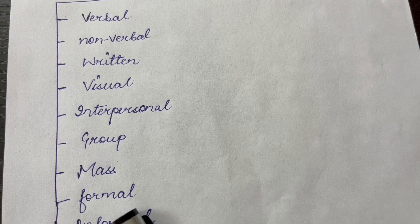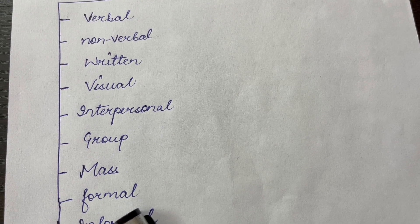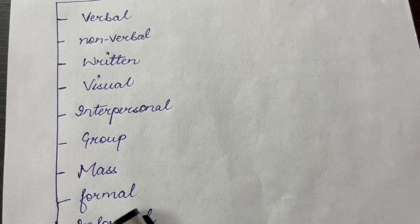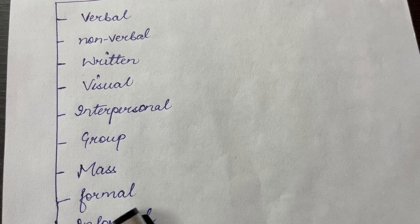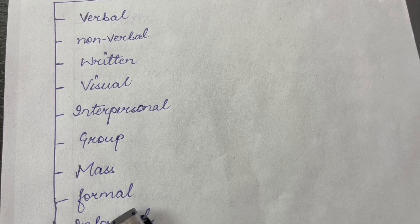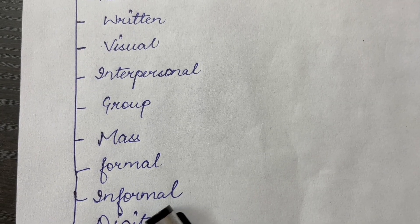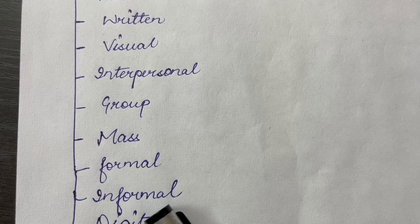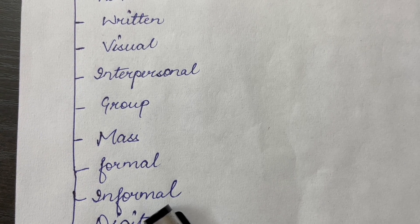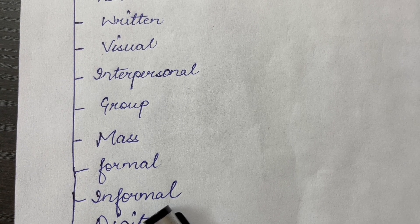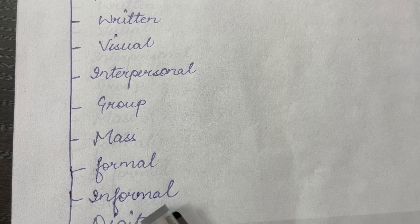Next is formal communication. Structured and official communication within an organization such as company policies, procedures and official announcements. Next is informal communication that occurs within social settings or through unofficial channels such as gossip or casual conversation.